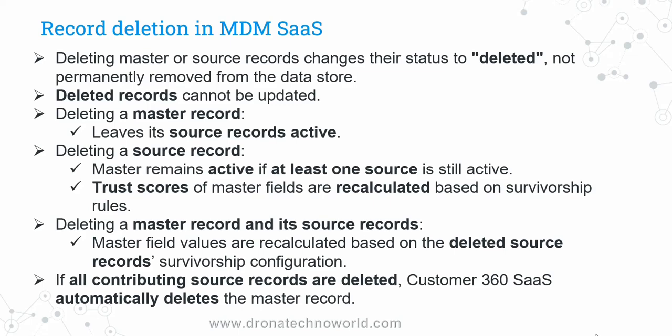In case we delete the source record, what will be the impact on the master record? Whenever we delete a source record and the given master record has more than one source record, the status of the master record will remain active as long as one of the source records is active.